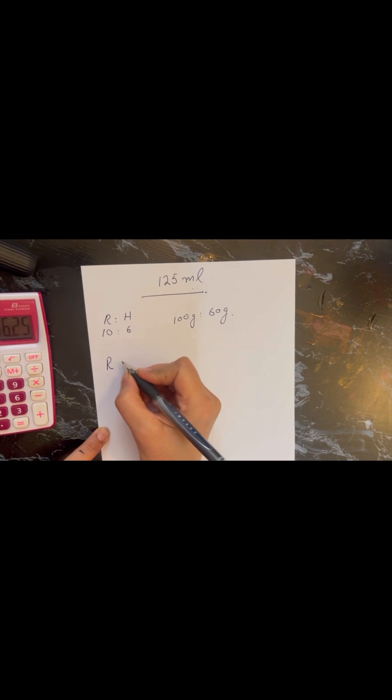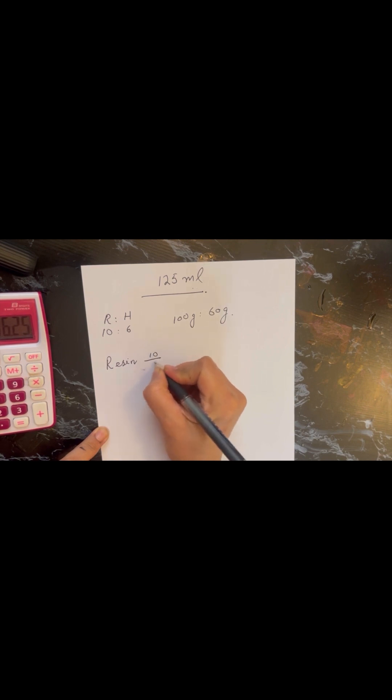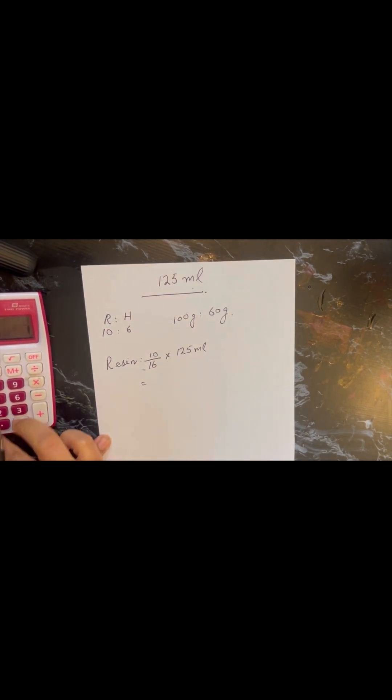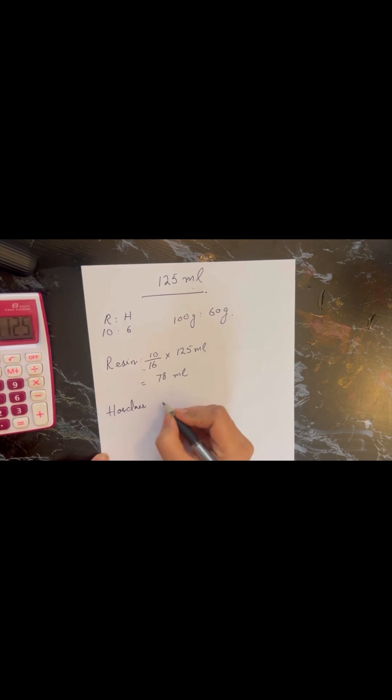Same, it's 10 ratio 6 or 100 ratio 60 grams as well. Don't get confused, they both mean the same. Now the resin is going to be calculated as 10 by 16 times 125 ml and the answer is 78 ml, 78.1 but we will round it down.